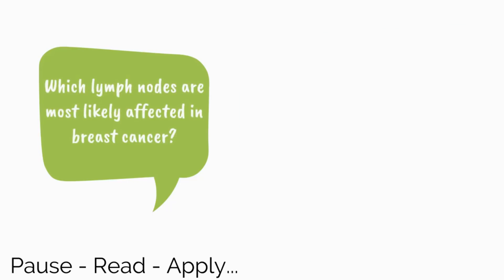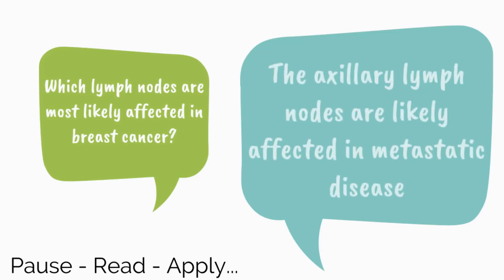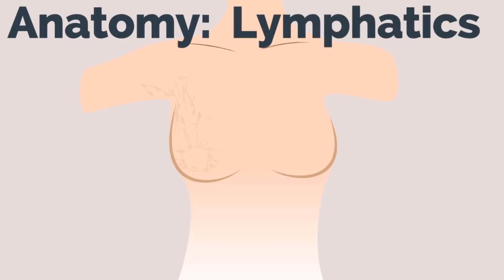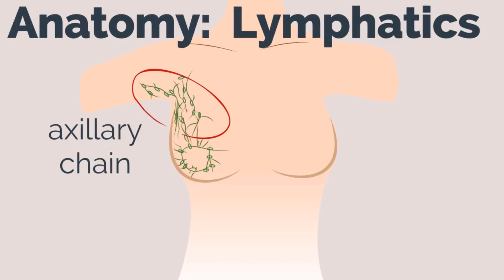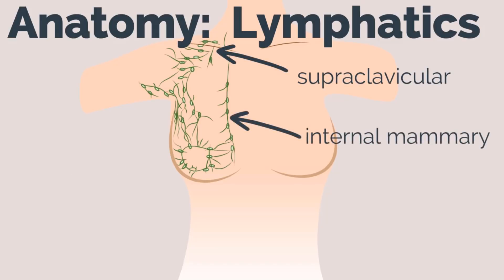Which lymph nodes are most likely affected in breast cancer? The axillary lymph nodes are most likely affected in metastatic disease. For lymphatic drainage, the majority of the breast drains to the axillary chain. Drainage also occurs through the supraclavicular nodes and internal mammary nodes.